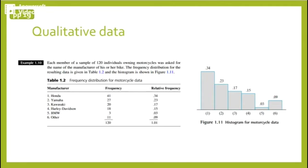Sometimes there will be naturally occurring classes and other cases it will be more arbitrary. Example 1.10 is a nice example of a histogram for qualitative data.